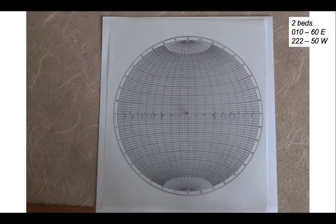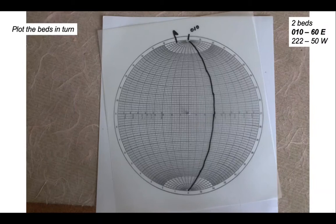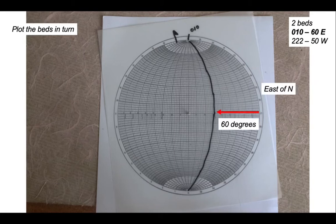Let's go to a stereonet and deal with an example. We'll have a bed from each limb — the orientations are shown in the top right. We've got two beds and we'll plot them in turn. Starting with the first: mark a north arrow, find the bearing of the strike which is 010, spin that orientation around so it lines up with the tracing circles, and sketch out the great circle representing a dip of 60 degrees towards the east, measured in 60 degrees from the east side from north.